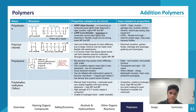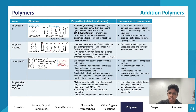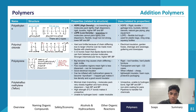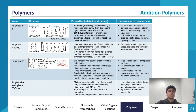High density polyethylene is produced using a catalyst, which means it doesn't branch as much. Because of that, it's more rigid, durable, and has a higher melting and boiling point than low density polyethylene. Its rigid and durable properties mean it's used for garbage bins, buckets, kitchen utensils, natural gas piping, and play equipment. It's very important to link properties to uses — the uses always relate to the properties.